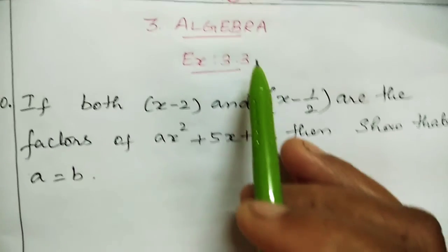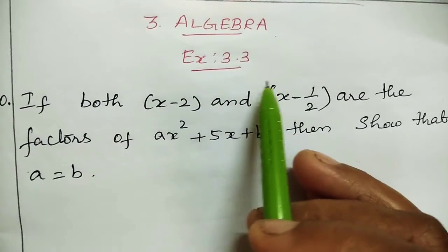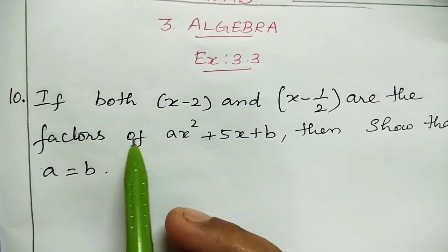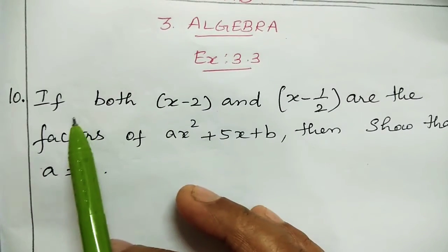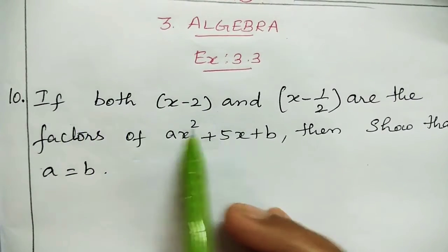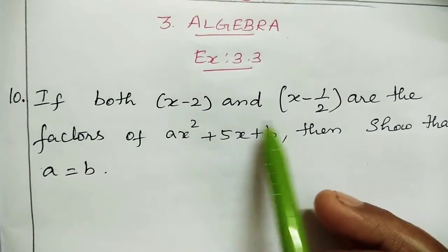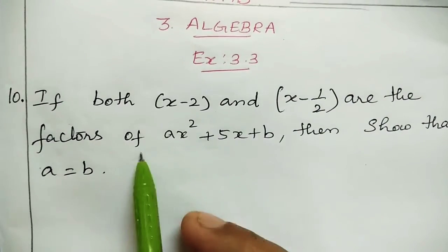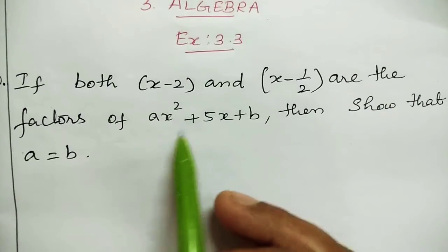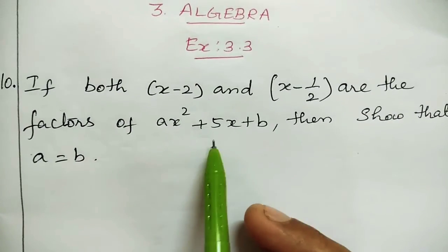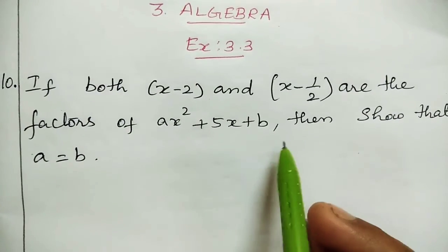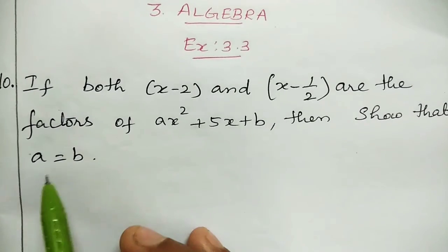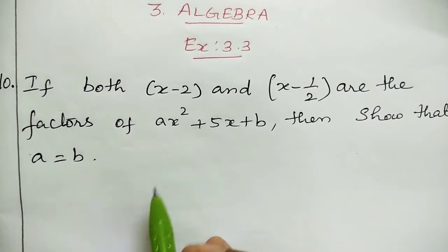Chapter 3, Algebra, example 3.3. If both (x minus 2) and (x minus 1/2) are the factors of ax squared plus 5x plus b, then show that a is equal to b.